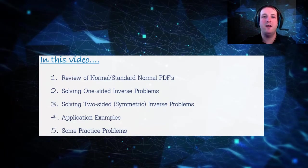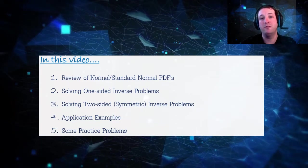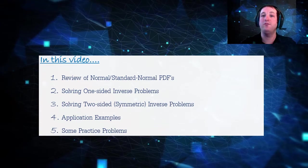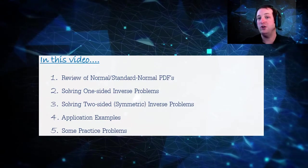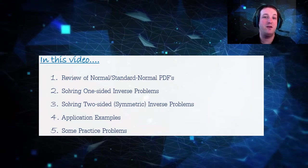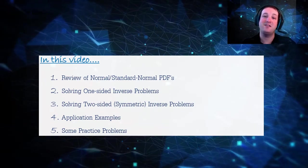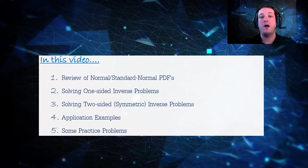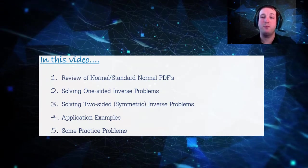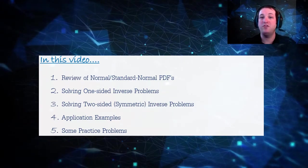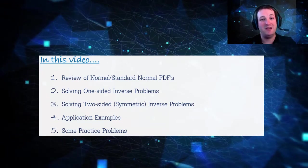Hello everyone and welcome back. In this video we're going to continue our discussion of normal and standard normal continuous random variables. In the last video we primarily focused on how to solve probability problems if we are given just a standard normal random variable, or a normal random variable where the mean and standard deviation were given, and the relationship between the two distributions. In this video we're going to continue the discussion but we're going to solve problems that require a backwards process — in particular, given a particular probability, we want to know between what two numbers on the standard normal or normal distribution that probability exists.